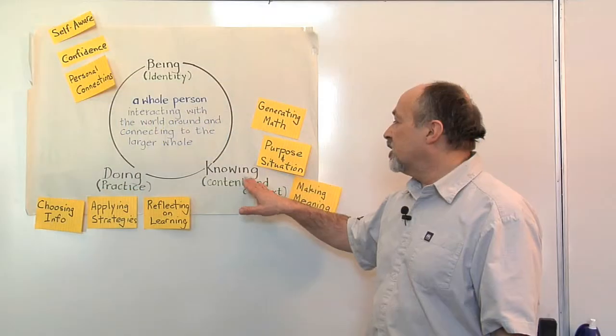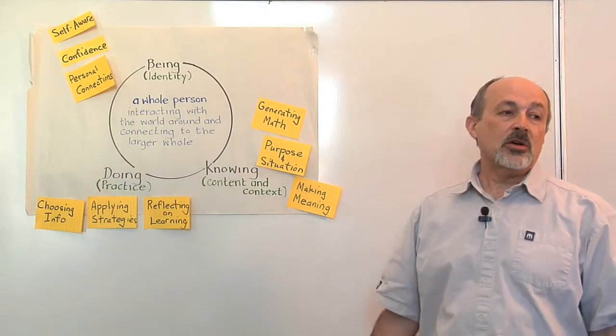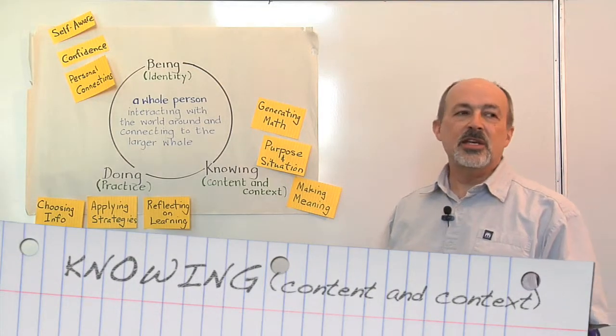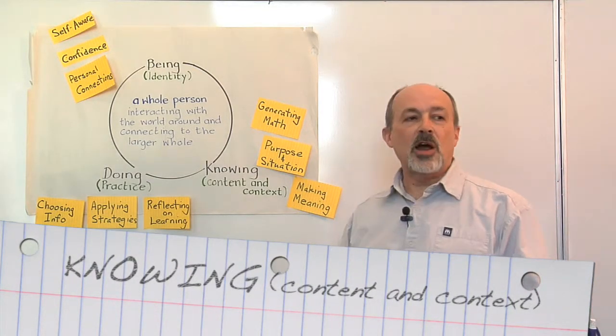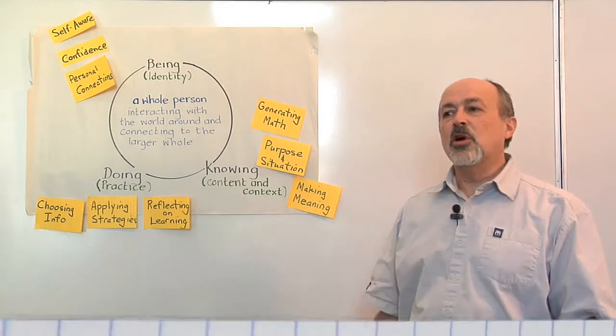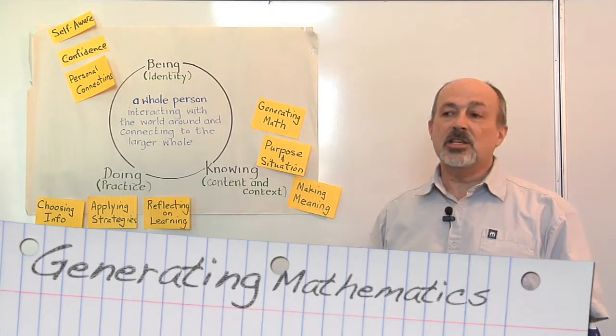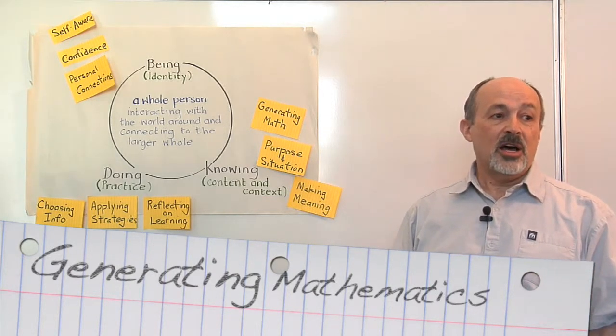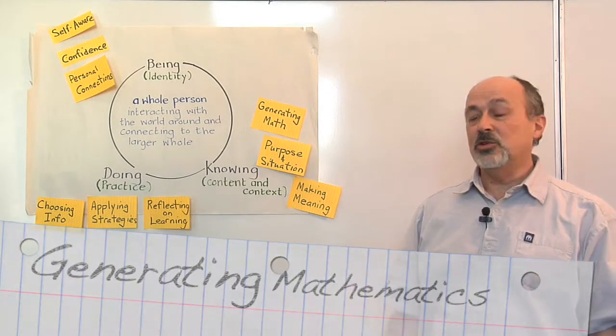The third aspect is called knowing, or what the context or the content of the learning is. Now this isn't just about acquiring skills. We believe it's more than that. It's generating mathematics, generating mathematical problems and procedures. It's not from above; it's something that you do.